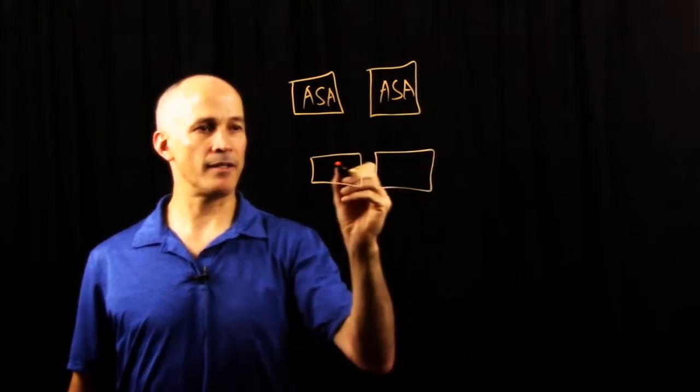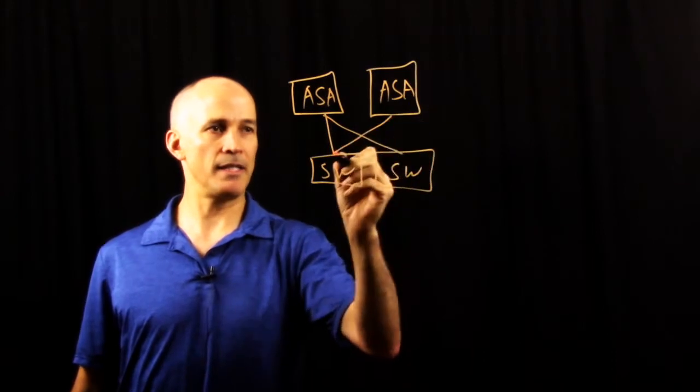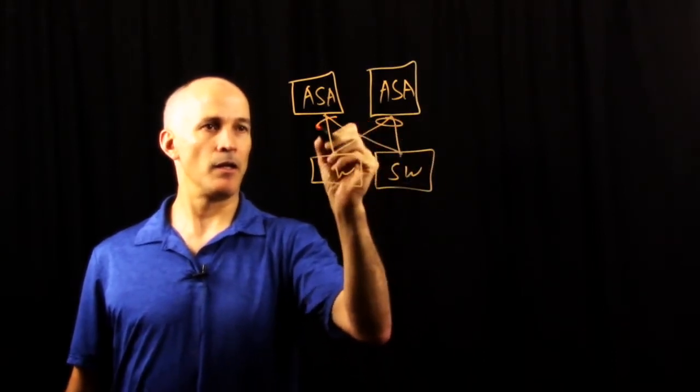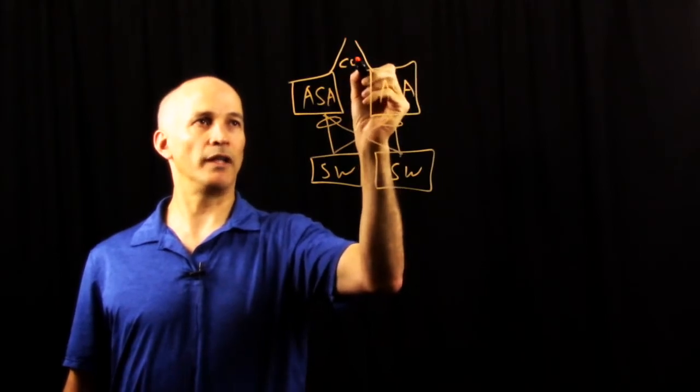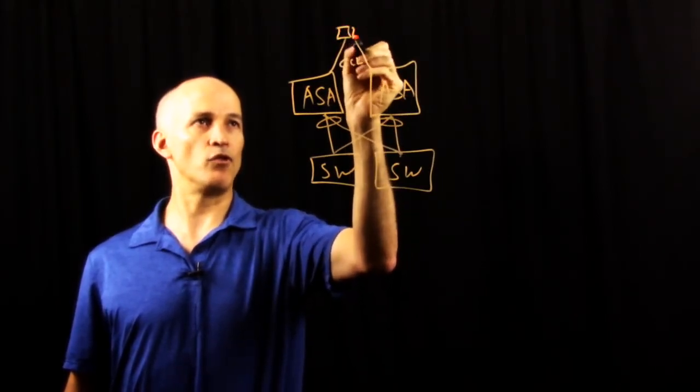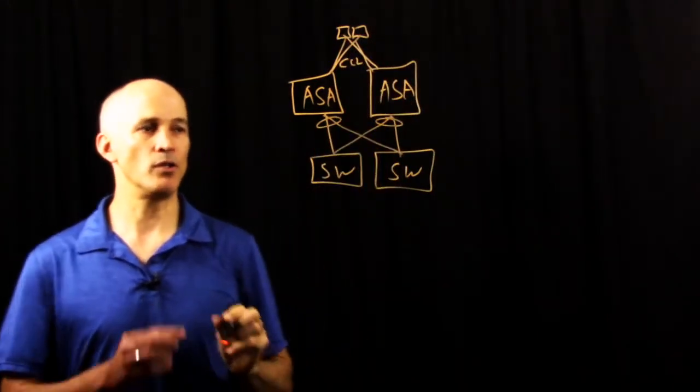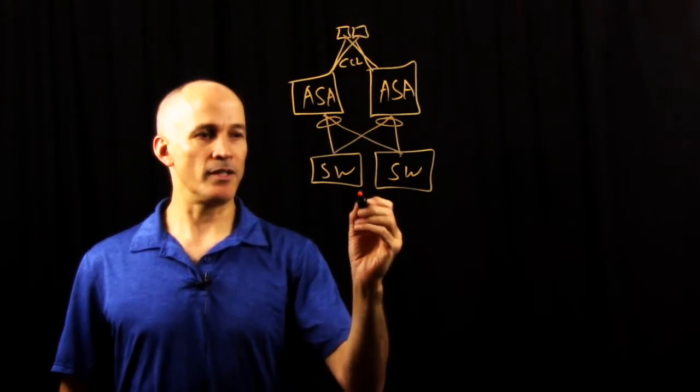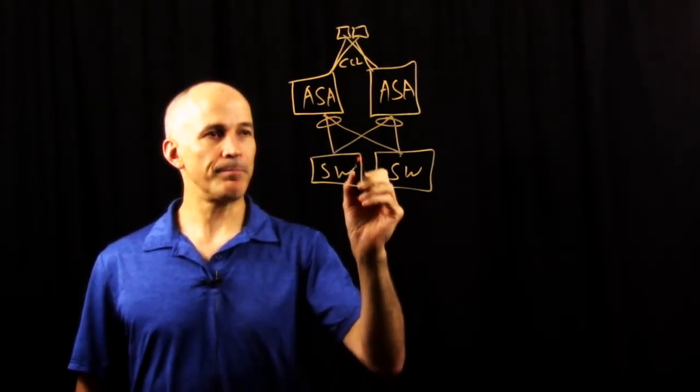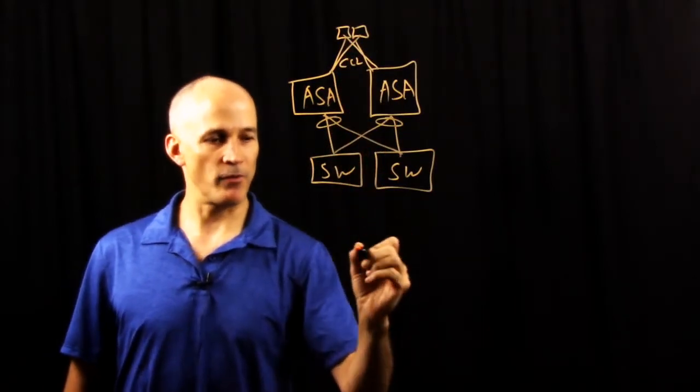Just like normal, we connect the ASA cluster into a pair of switches using virtual port channels, VPCs. And as always, we have a cluster control link that goes off generally to another pair of switches. Could be the same switches, could be different, depending on your deployment model and your requirements. The ASA is in a cluster and connected to a pair of switches.